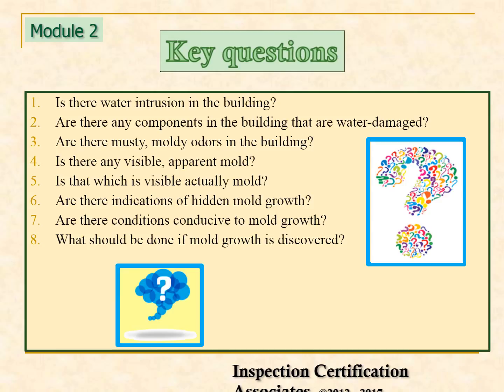Before the inspection actually begins, an inspector should ask these eight key questions: Is there water intrusion in the building? Are there any components in the building that are water damaged? Are there musty, moldy odors in the building? Is there any visible apparent mold? Is that which is visible actually mold? Are there indications of hidden mold growth? Are there conditions conducive to mold growth? What should be done if mold growth is discovered?